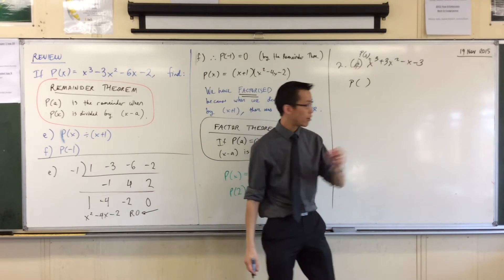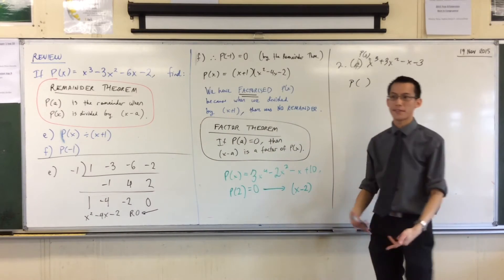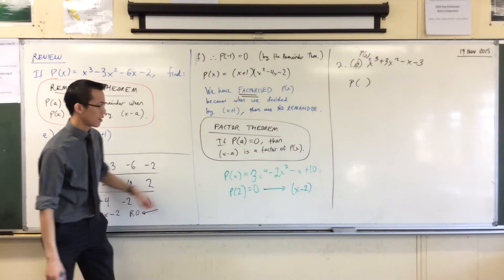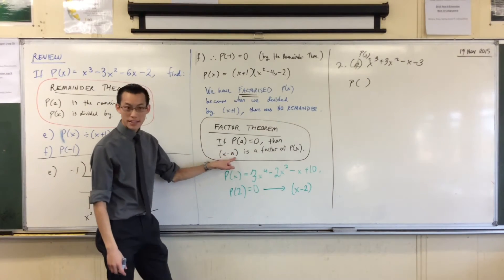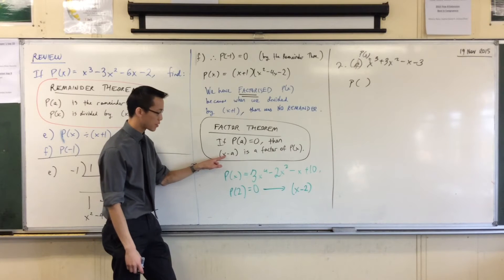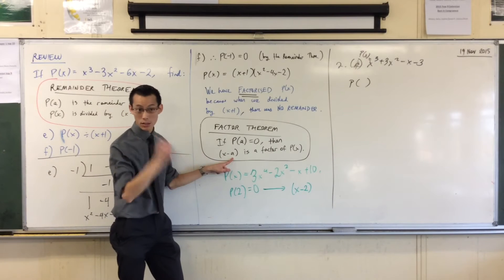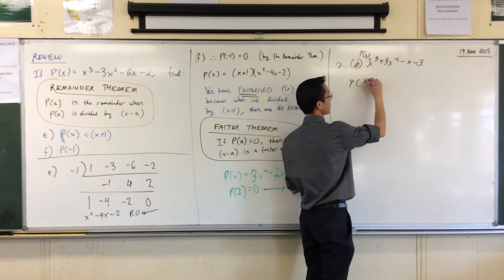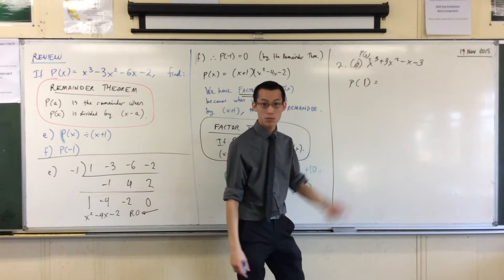to show that x minus 1 is a factor? What's the number I'm going to pair with that? If I've got x minus A, they want me to go x minus 1. Well that means A is 1. So I'm going to test P of 1. I'm just going to give this a crack.